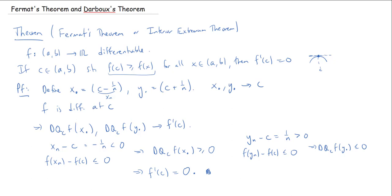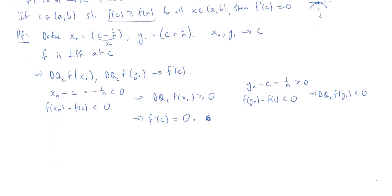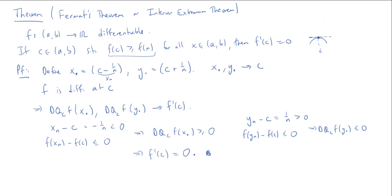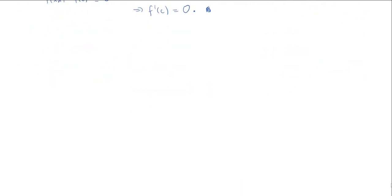This is interesting — you saw this in Calc 1 all over the place. You try to maximize a function, take the derivative, set it equal to zero. That's because if you find a max point, the derivative must be zero. Of course, you could also have a point like a corner where the derivative doesn't exist — that's a separate issue.